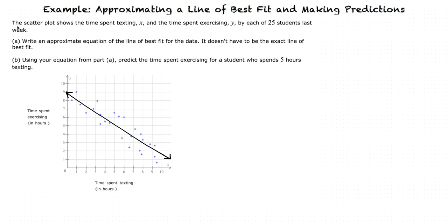It looks like we can identify (0, 9) and (4, 6) as approximately being on our line of best fit. We will use these points to find the slope of our equation of the line. Slope, which can be represented by m,